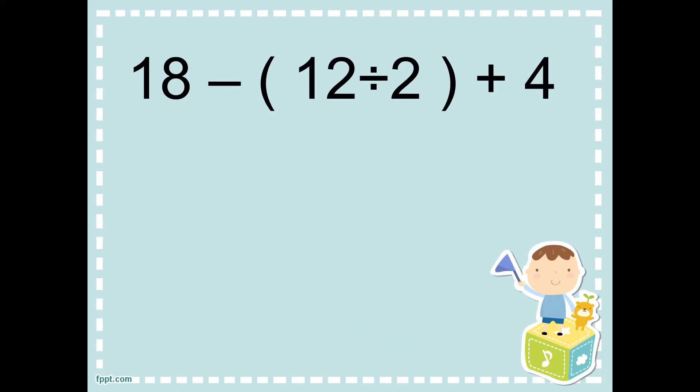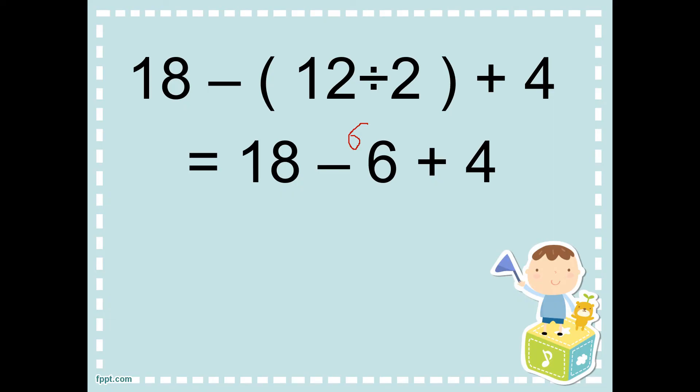Next example. Eighteen minus twelve divided by two plus four. Again, we will follow the PEMDAS rule since we have parentheses. What happens is, we will just copy eighteen and four. So, first, twelve divided by two equals six. So, it becomes eighteen minus six plus four.